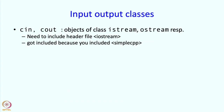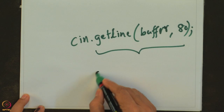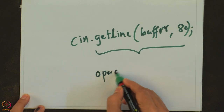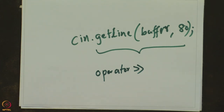Now you may say that iostream I did not explicitly include, but we have discussed this earlier — that got included because you included simple CPP. And the less-than less-than and greater-than greater-than are actually operators, and they have been defined for the objects by using things like operator>>.